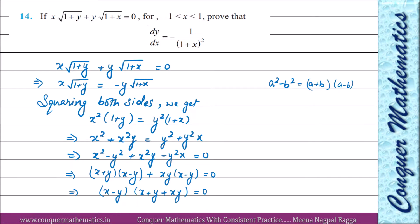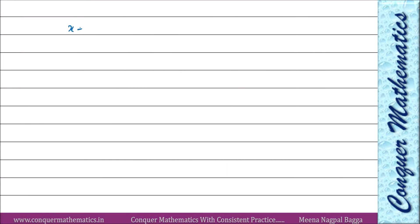Toh dono ka product 0 aa gaya. Dono ki equality hum assume nahi karte, warna question ki existence khatam ho jaegi. Hum doosra expression khol lete hain: toh hamare paas aata hai x + y + xy = 0. Actually humne kya kiya — jo expression diya hua tha, usse ek simplified expression nikala.